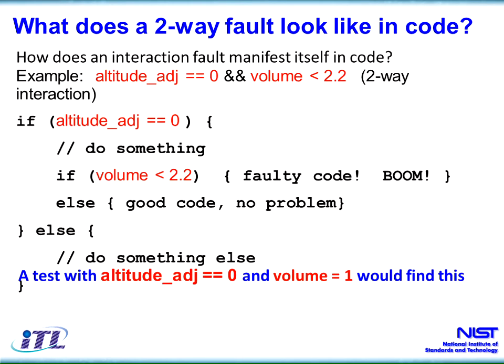Here's an example of what this might look like in code. Two factors: altitude adjustment is zero, and volume is less than 2.2. If the altitude is zero, we do something and then the next condition evaluates true and falls into faulty code. If we have a test that includes altitude of zero and a volume less than 2.2, then we would trigger the problem. However, if we had a test that had only one of those conditions true, we would not necessarily detect that problem.